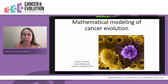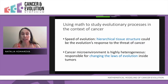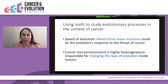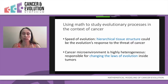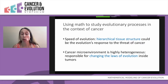Thank you very much for the opportunity to speak. Today, in this short presentation, I will talk about mainly two things — these are the take-home messages — and they're both about using mathematics to study evolutionary processes in the context of cancer. The first message is about the co-evolution of cancer and host. Mathematically, we can calculate the speed of evolution, and we can show that the very hierarchical structure of tissue perhaps has evolved as evolution's response to the threat of cancer. The second message is about the complexity of the cancer microenvironment. I will show you that this complexity is responsible for changing the very laws of evolution. Evolution inside cancer may have some very special laws.